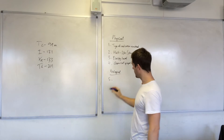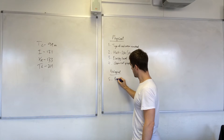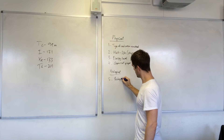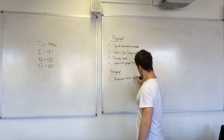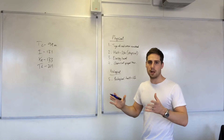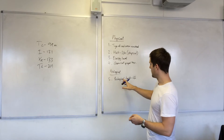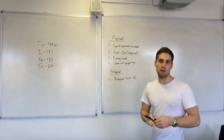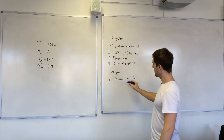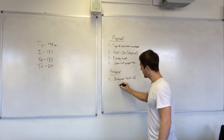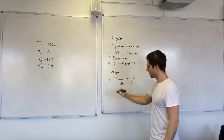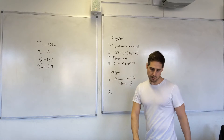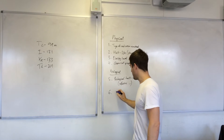On the biological side, we have the biological half-life. When you mathematically combine the biological and physical half-life, you get the effective half-life. So we'll see more about that in a moment. Number six is the behaviour inside the body.